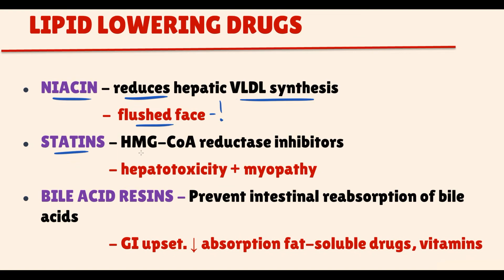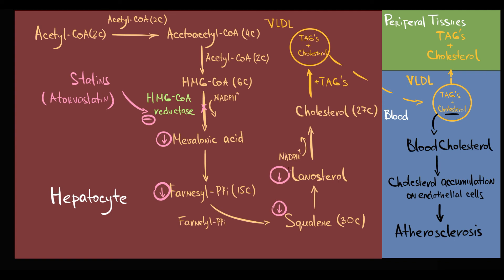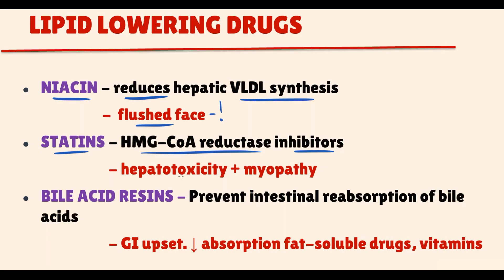Another class of drugs called statins inhibit cholesterol synthesis. Statins — atorvastatin for example — decrease the activity of HMG-CoA reductase by competitive inhibition. Inhibition of HMG-CoA reductase causes decreasing cholesterol production, which leads to decreasing cholesterol concentration in the bloodstream, thereby decreasing cholesterol accumulation on endothelial cells and slowing atherosclerosis progression. The signature side effects of statins are hepatotoxicity, causing elevation of alanine aminotransferase and aspartate aminotransferase, and also myopathy.